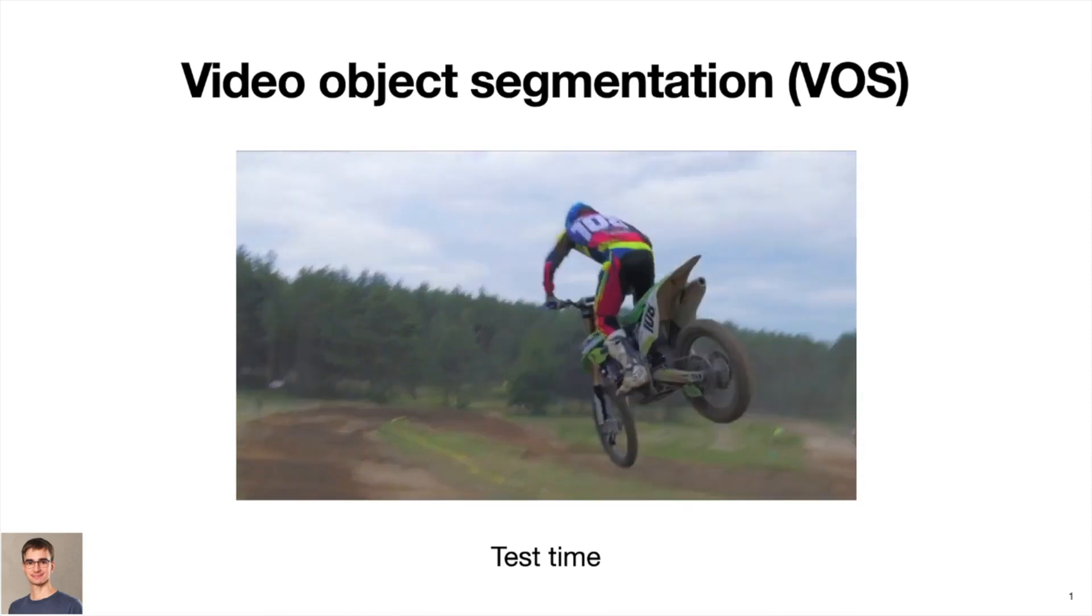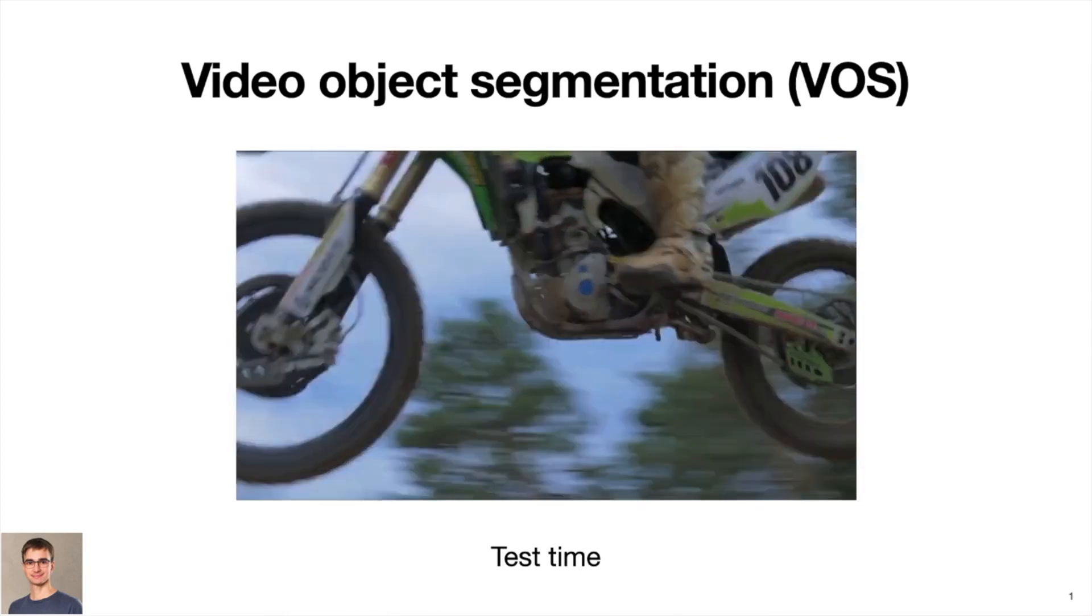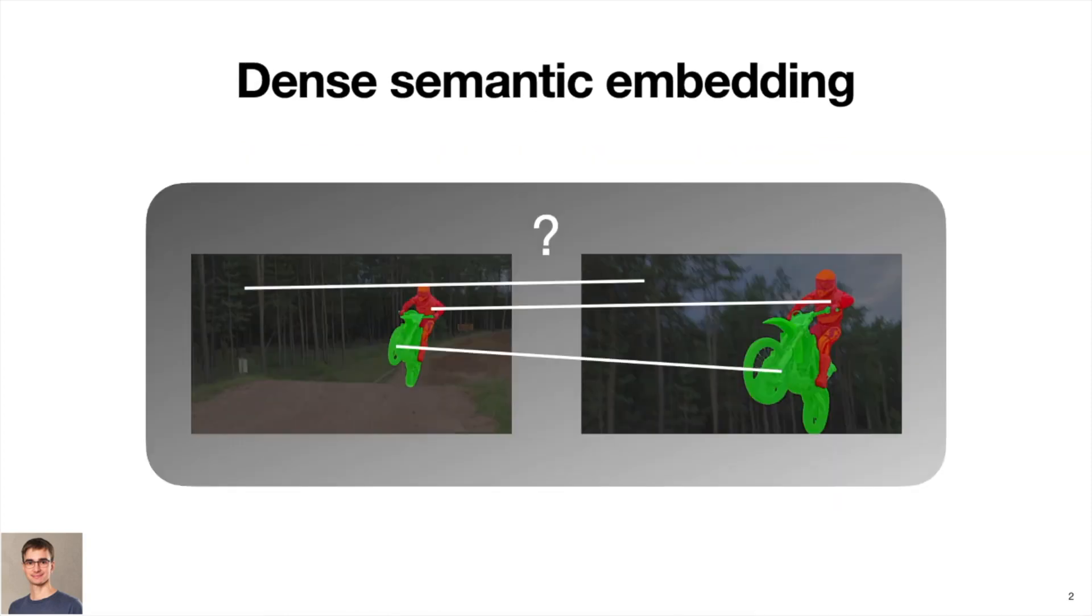The object motion can be arbitrarily fast and affect the degree of pixel displacement. We need to learn a feature representation that is invariant to these changes, so we can track the objects reliably throughout the whole sequence.